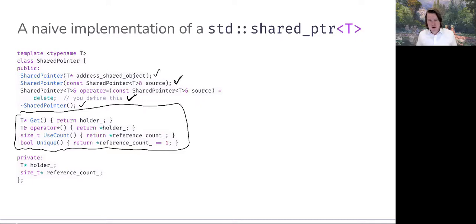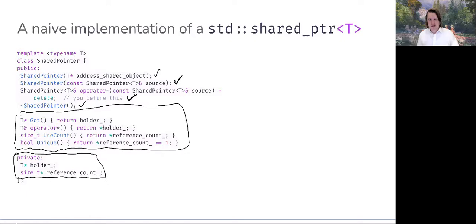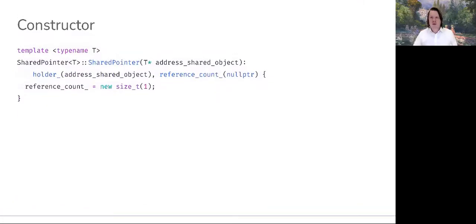The dereference operator returns the dereferenced holder, giving us a reference to the object pointed to by holder. use_count() simply dereferences reference_count and returns an object of type size_t, communicating the number of shared pointer objects engaged in shared ownership of the object pointed to. unique() is as described on the previous slide. Our data members are: holder, a pointer to type T, and reference_count, a pointer to size_t — both initialized with addresses of objects on the free store.